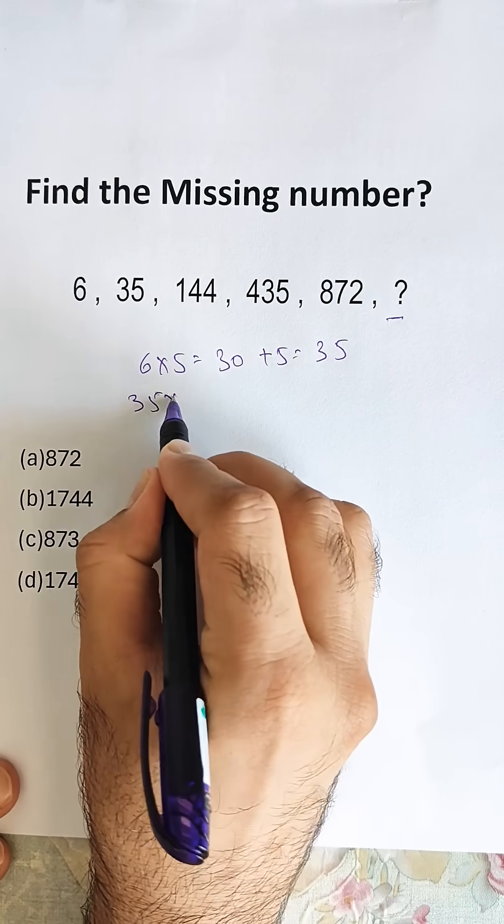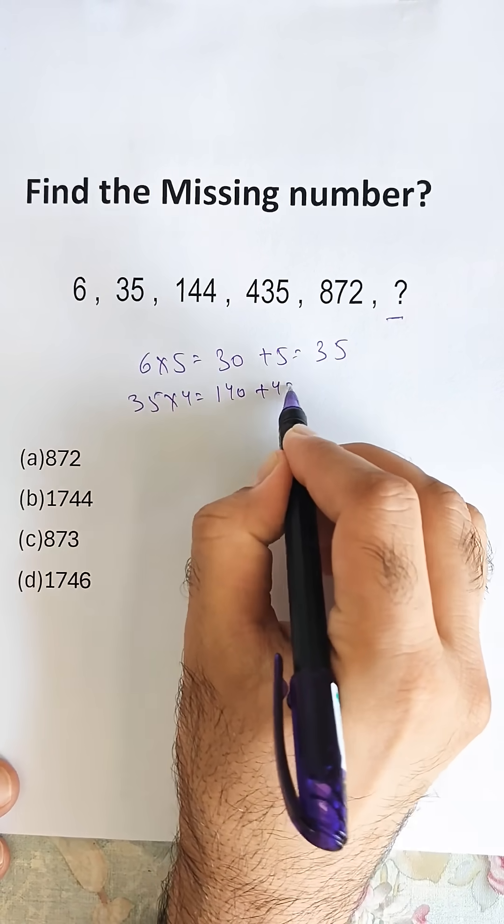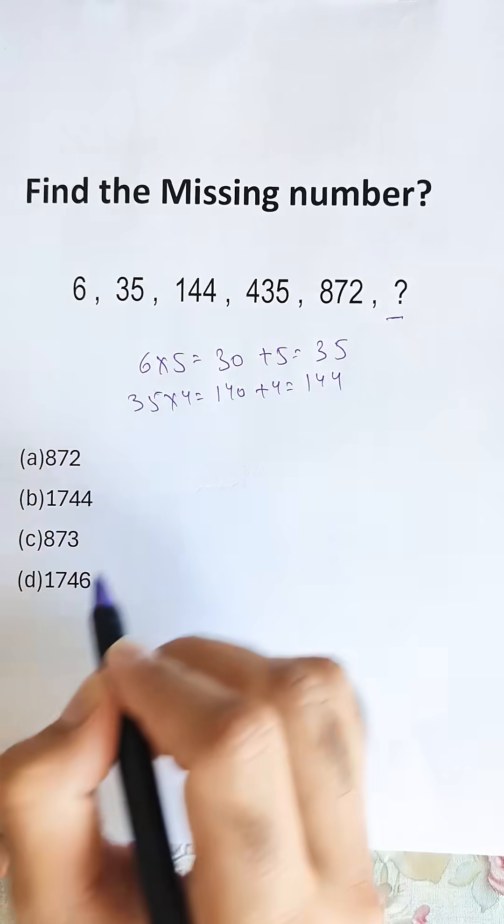Similarly, 35 into 4 is 140, and adding 4 we get 144.